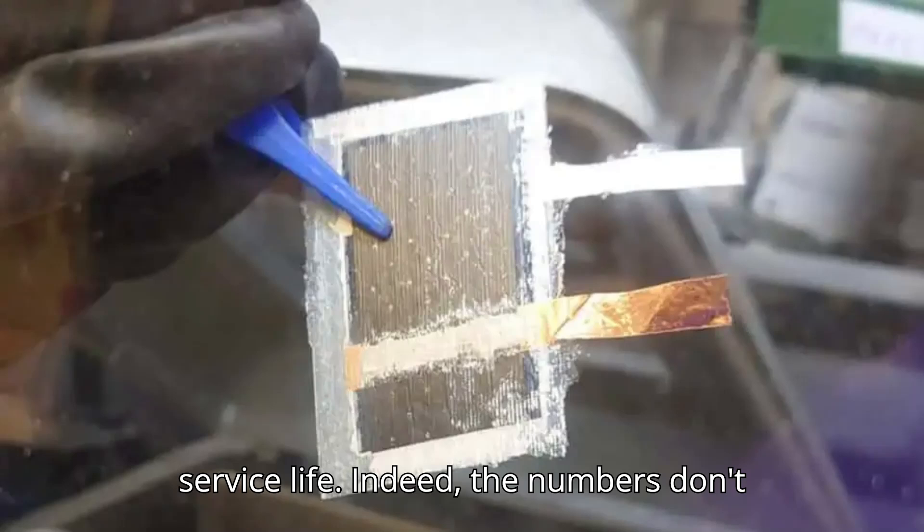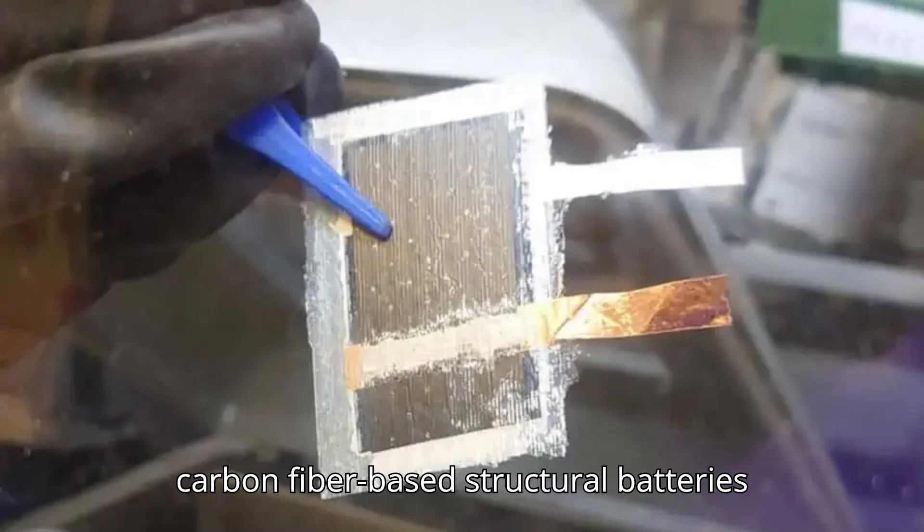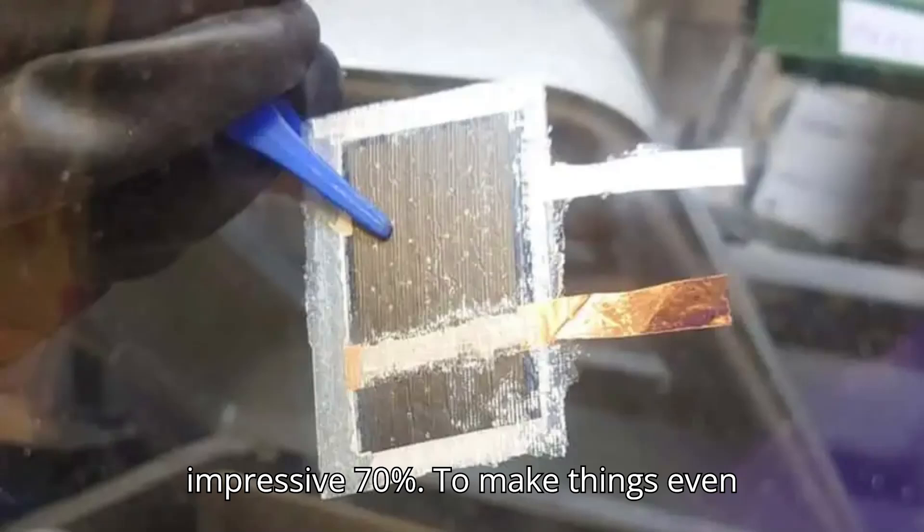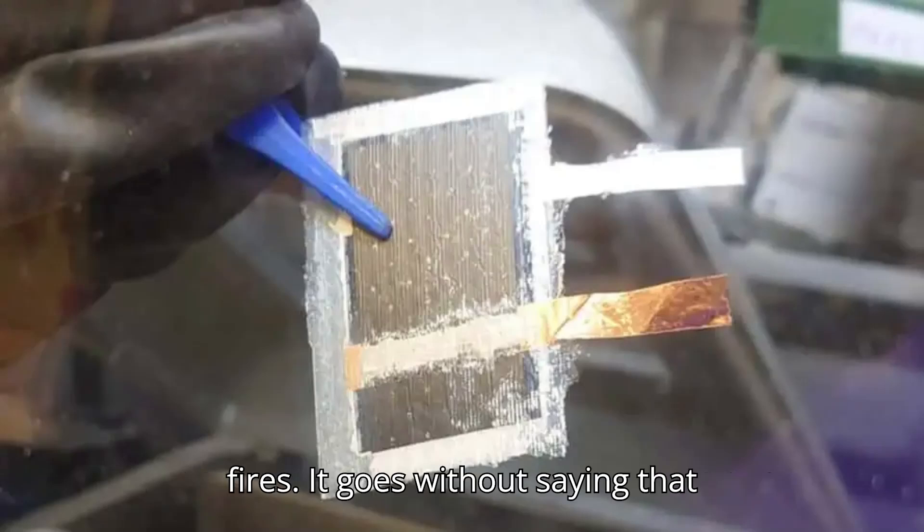Indeed, the numbers don't lie. Researchers at Chalmers University of Technology have found that using carbon fiber-based structural batteries could boost lightweight EV range by an impressive 70%. To make things even better, carbon fiber-based batteries don't contain any volatile substances, making them much safer and less prone to fires.